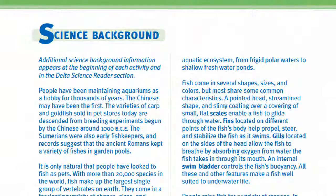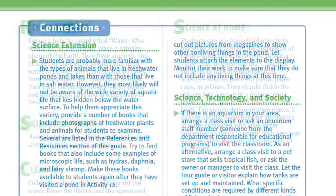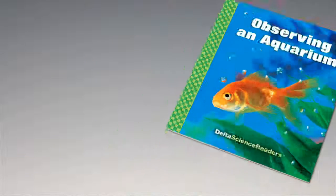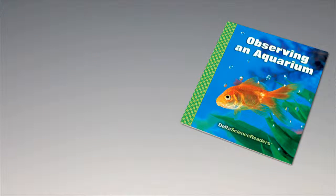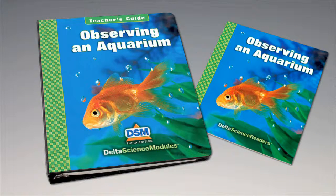To conclude this activity, have students return the aquariums to their storage place. Collect and clean all materials and return them to the kit. For science background, reinforcement activities, curriculum connections, and information about the Delta Science Reader, please consult your DSM teacher's guide.